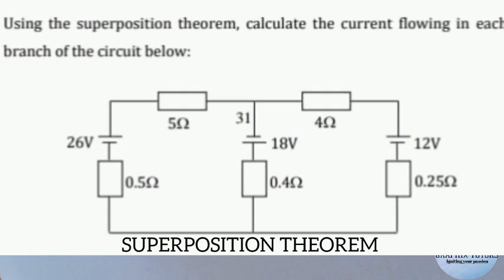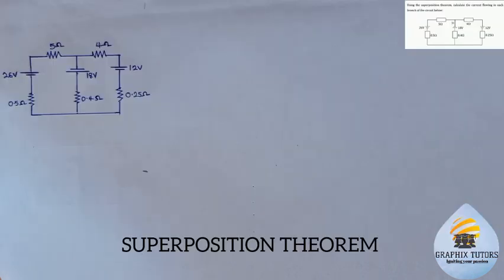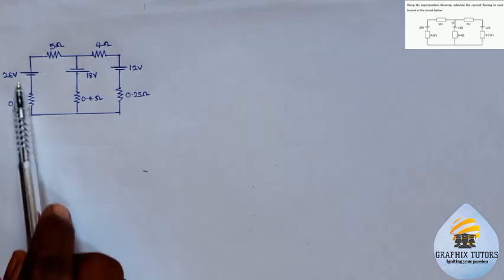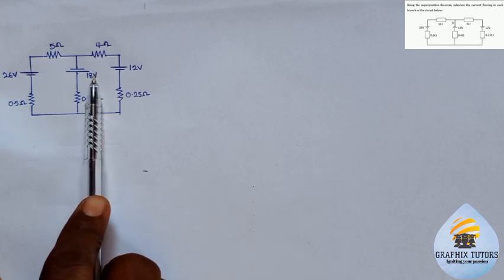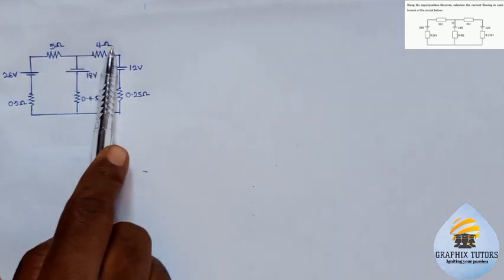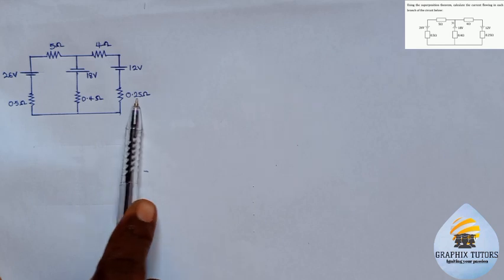Good everyone, my name is Graphics. If you look at the front of your screen you see a question: using the superposition theorem, calculate the current flowing in each branch of the circuit. This circuit has three different voltage sources: 26 volts, 18 volts, and 12 volts, and five resistors with resistance of 0.5 ohms, 5 ohms, 4 ohms, 0.2, 0.4 ohms, and 0.25 ohms.